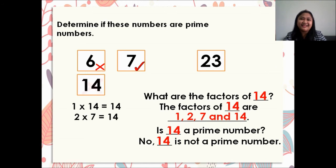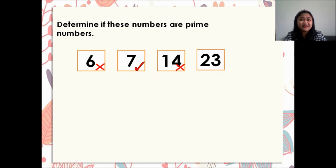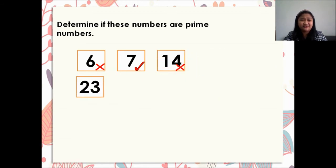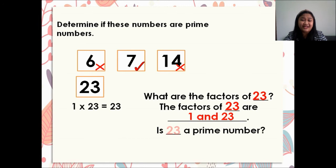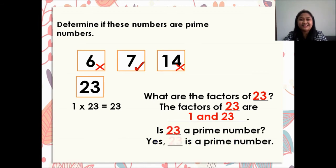Next, let's have 23. What are the factors of 23? We have 1 times 23 is equal to 23. So what are the factors of 23? The factors of 23 are 1 and 23. Is 23 a prime number? Yes, 23 is a prime number.